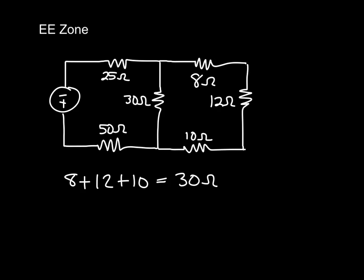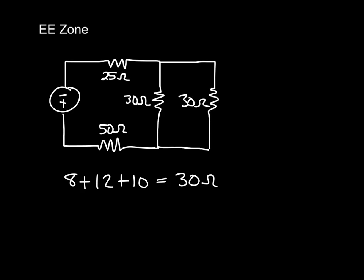So now we have a 30 ohm resistor we can go ahead and replace here, like so. And what you should immediately notice is we have two 30 ohm resistors in parallel here.